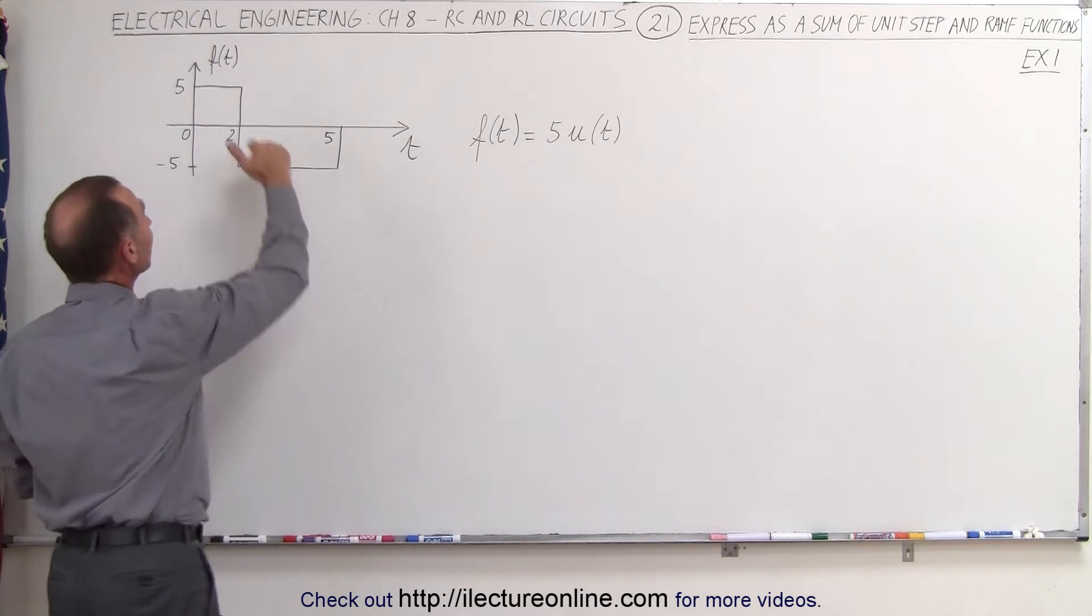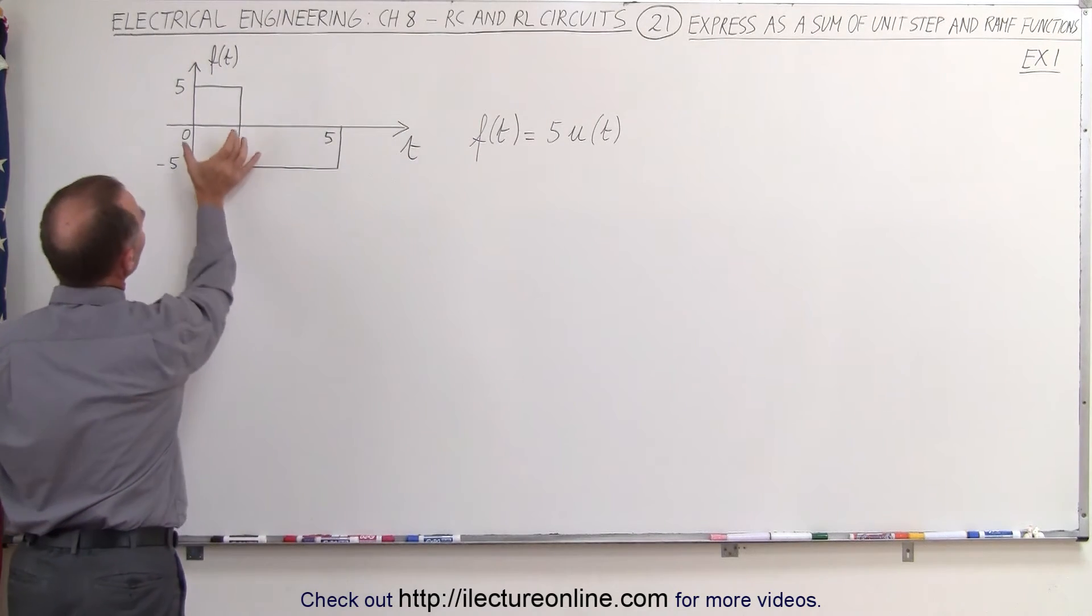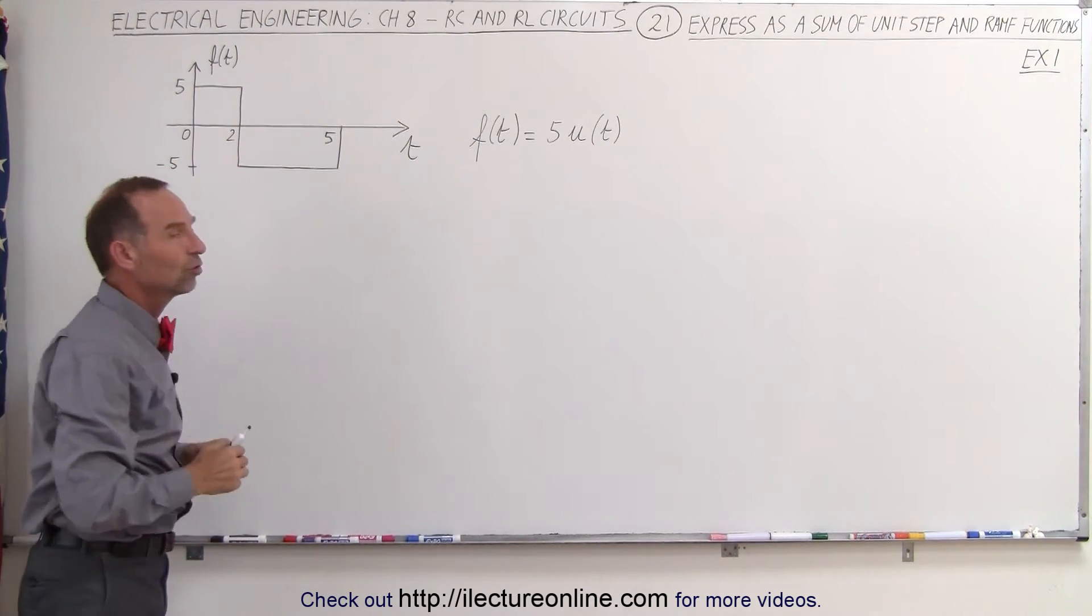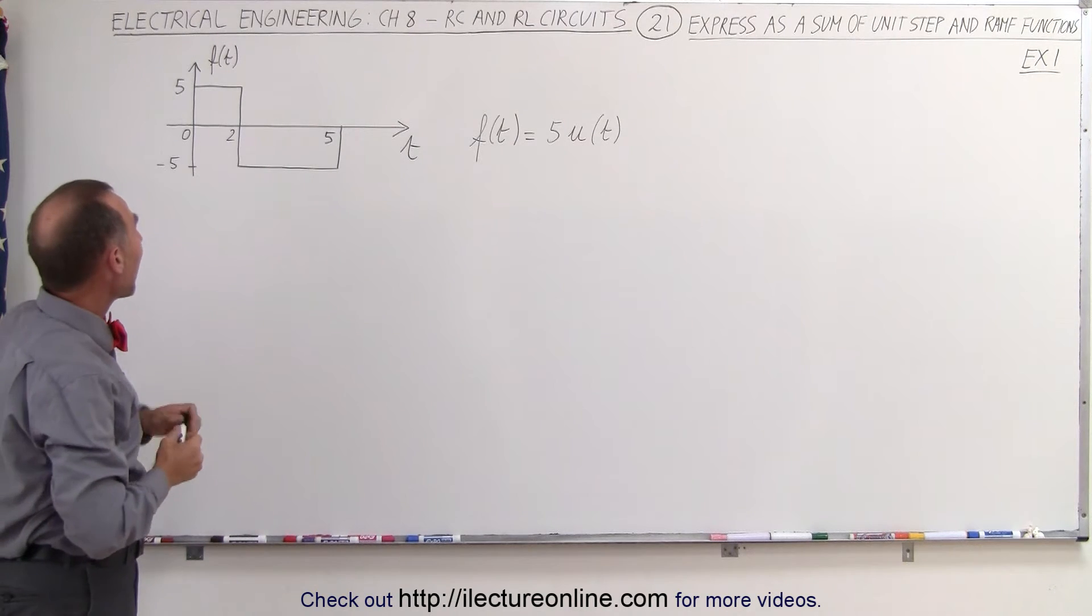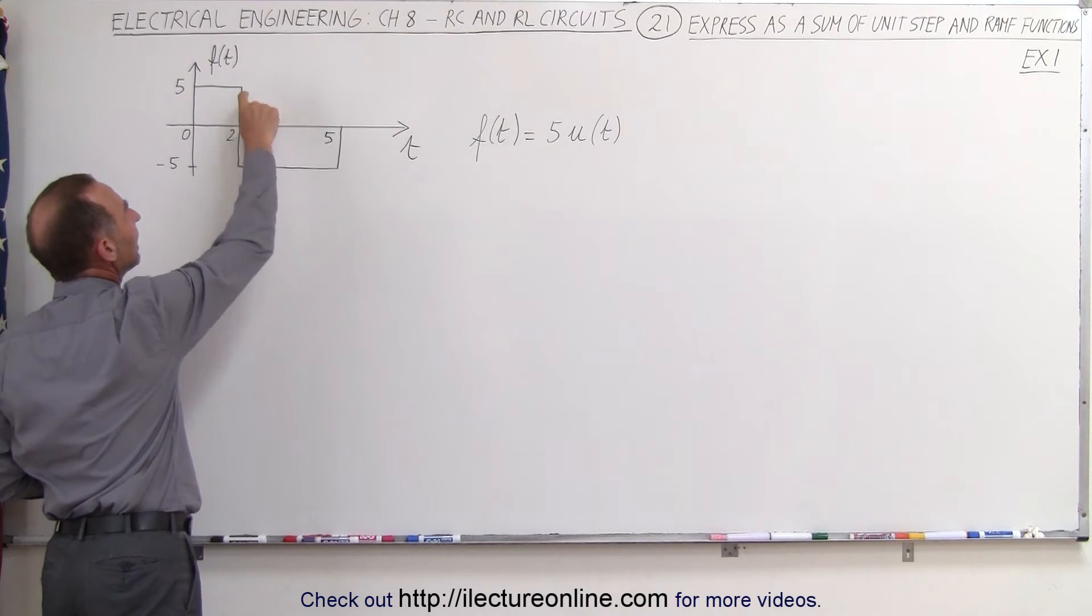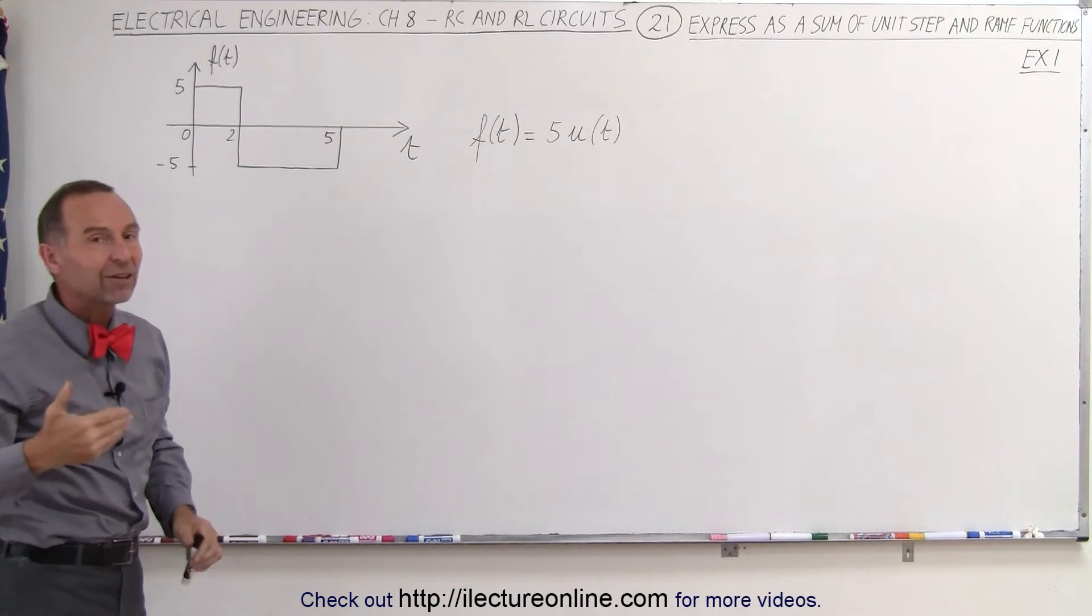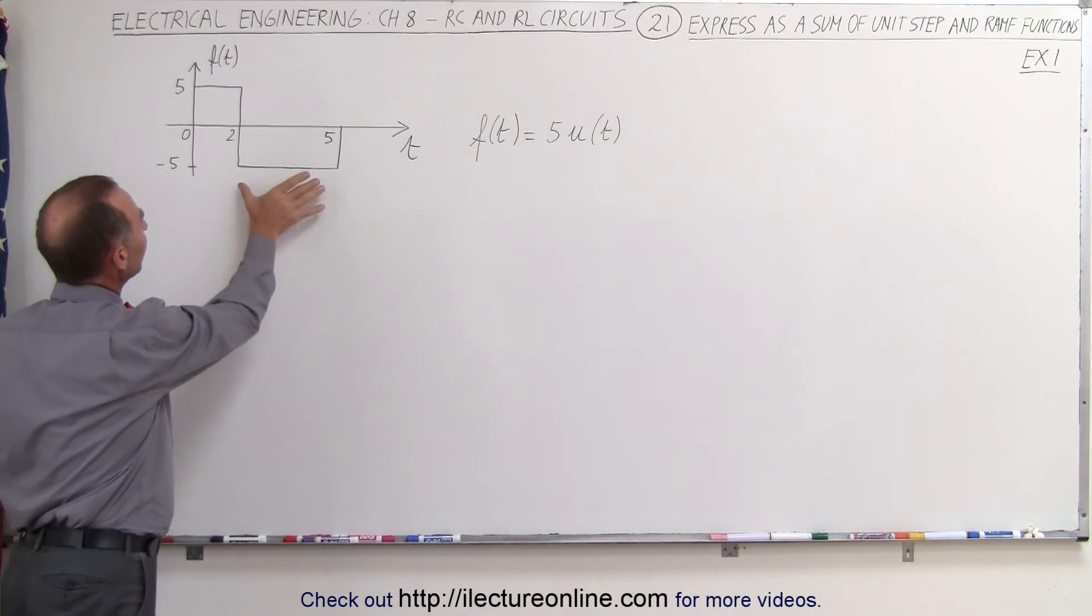Of course, that would give us an amplitude of 5 forever, for eternity, and it's only supposed to be like that for the first two seconds. So then we need to add another step function to first negate the first one, and then we have to have a negative input, or in other words, a minus 5 amplitude input for the next three seconds.